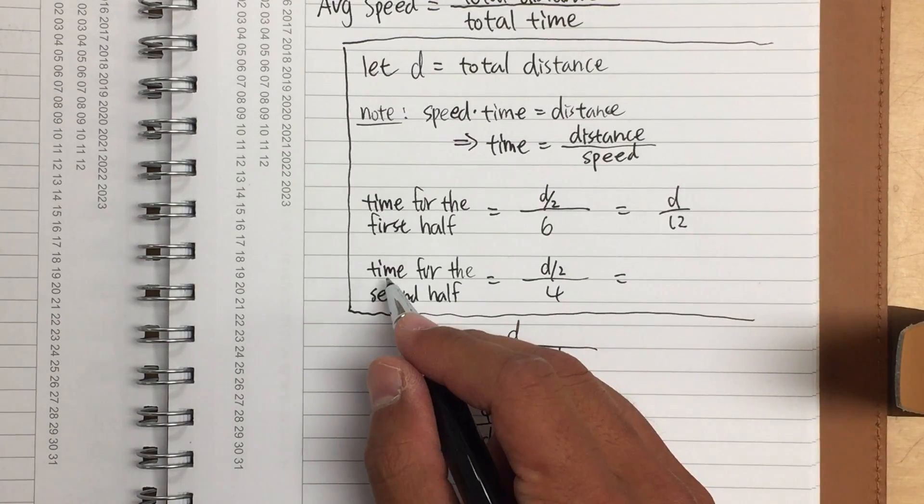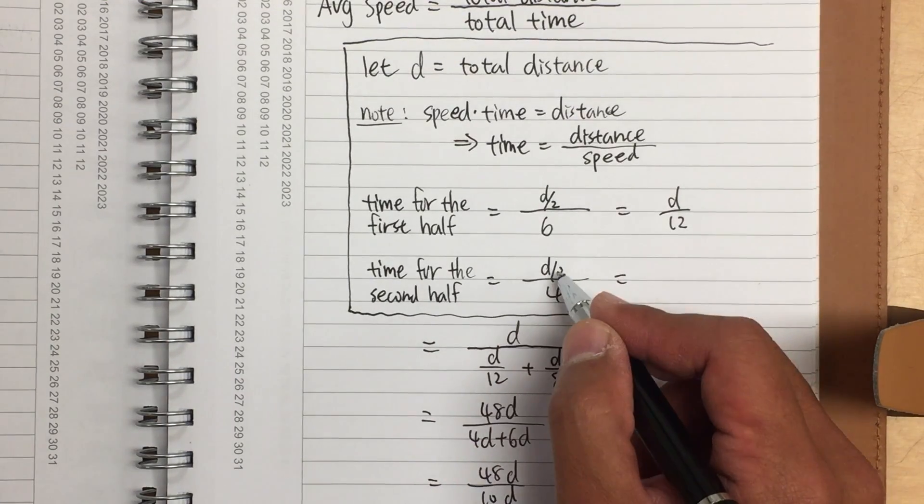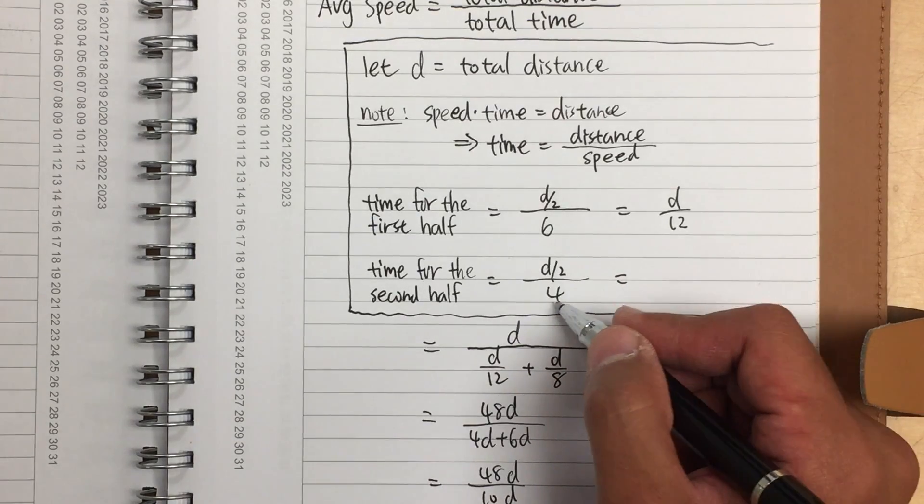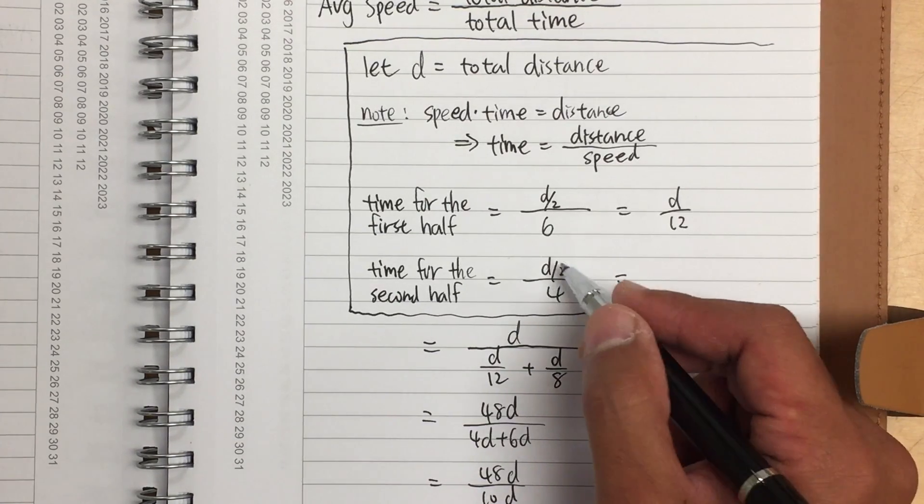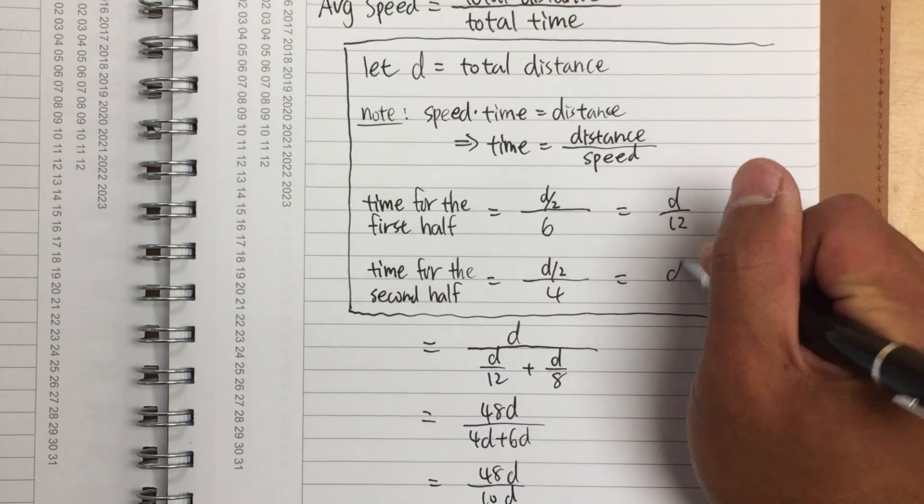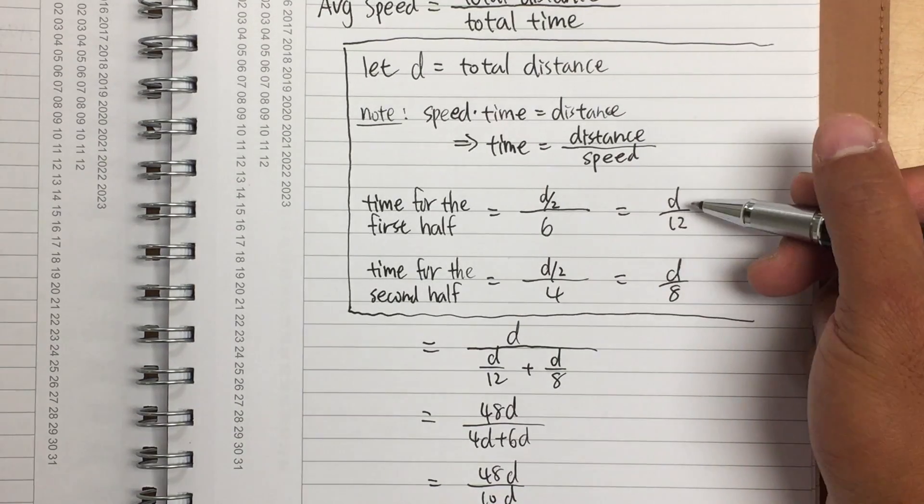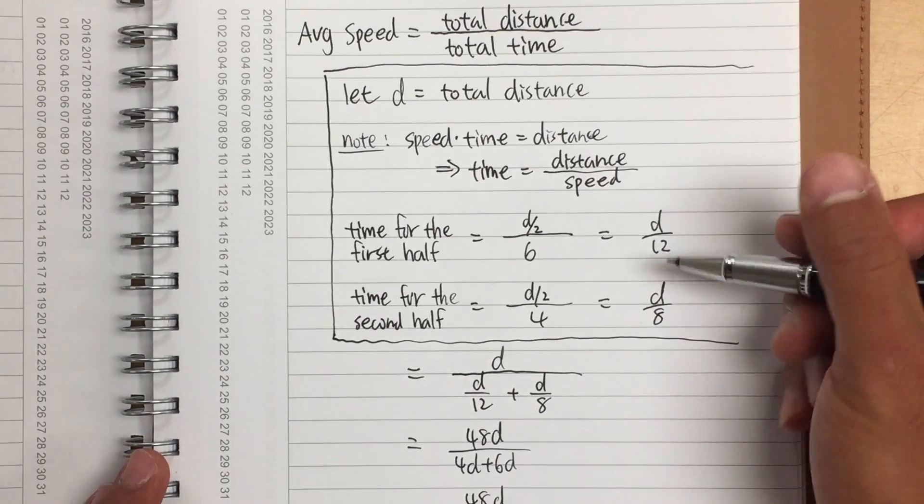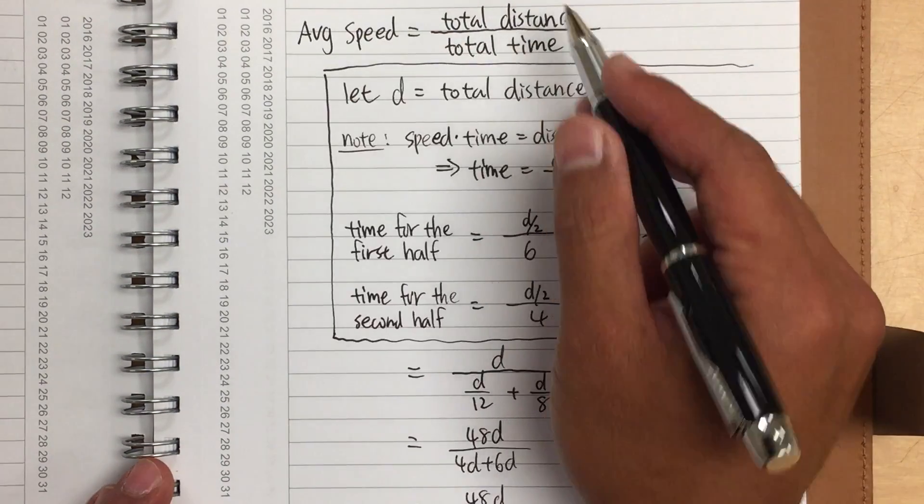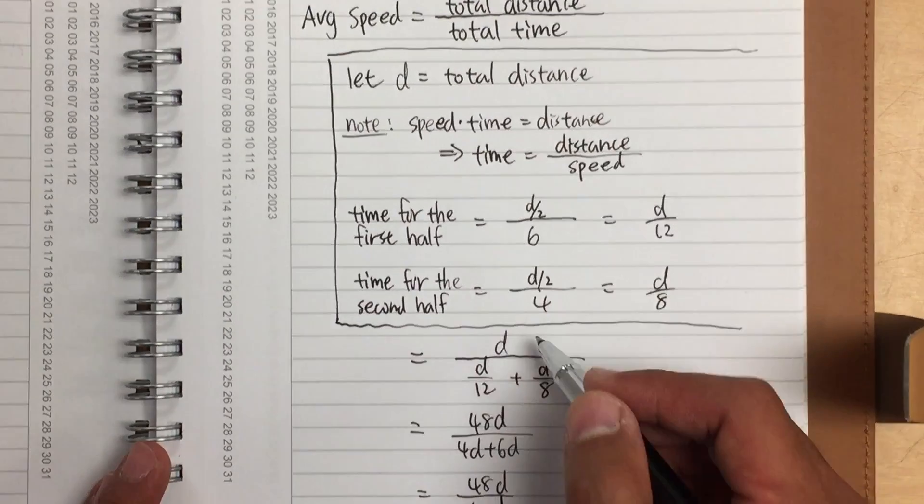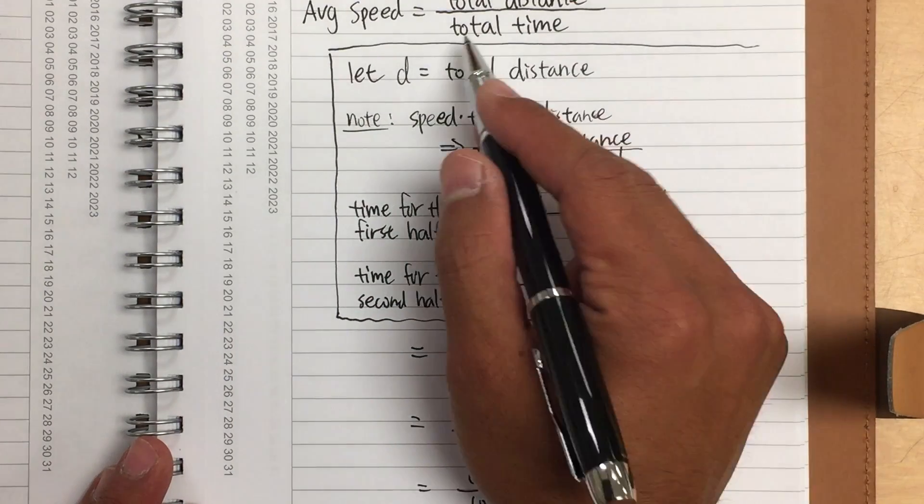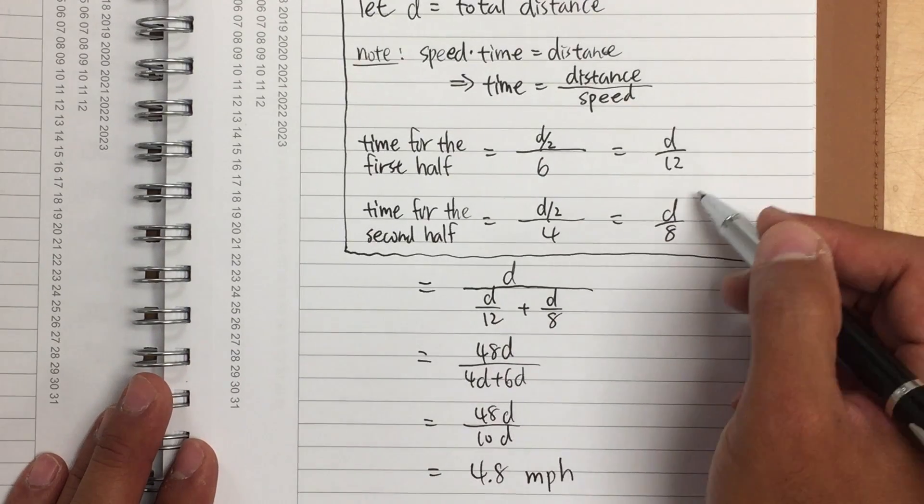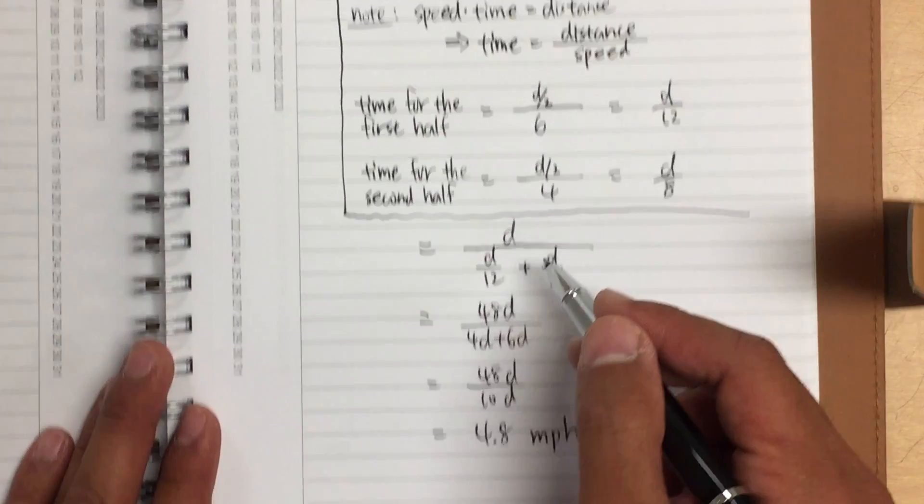And then likewise, the time for the second half, the distance will be d over 2 over the speed that I told you earlier, which was 4 miles per hour. d over 2 over 4, it's going to be d over 8. So when we add them up, this will be the total time length for the whole course. And now, let's look at this again. Average speed is equal to total distance, so I have the d on the top. And for the total time that I need, it will be this plus that, right? So I have d over 12 plus d over 8 on the denominator here.